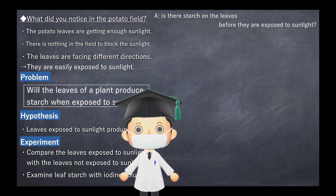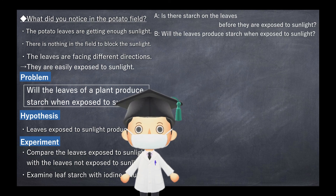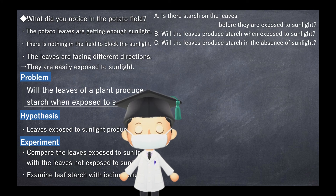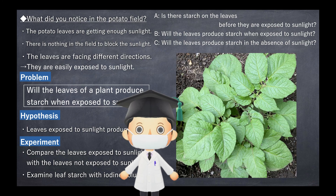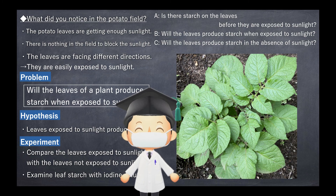Let's compare three patterns using potato leaves. In condition A: is there starch on the leaves before they are exposed to sunlight? In B: will the leaves produce starch when exposed to sunlight? In C: will the leaves produce starch in the absence of sunlight? It is better to choose young leaves over old and large ones, and use the same leaves as much as possible.